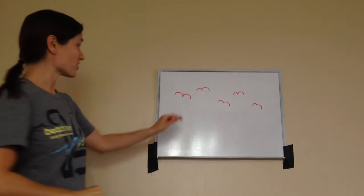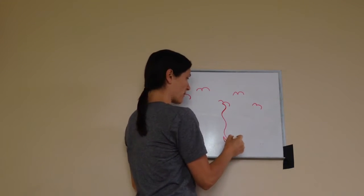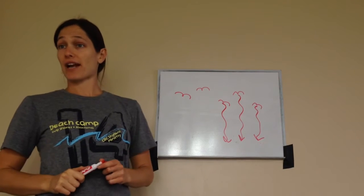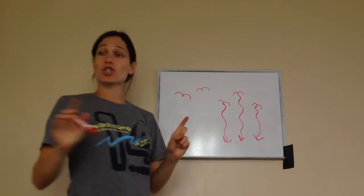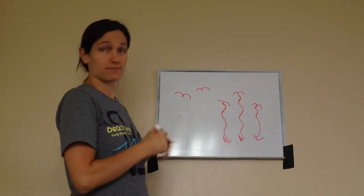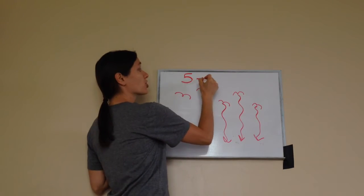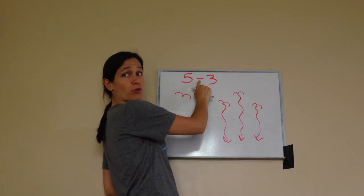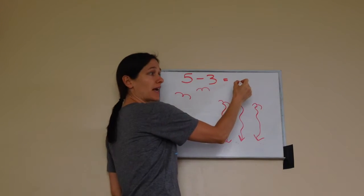As you can see, those are my birdies. Three of them fell to the ground. How many birdies do I have left up in the air? Two, you're exactly right. So I'm going to show you a subtraction sentence: I had five flying birds, I took away three that fell — minus three — and how many did I have left in the air? Two.